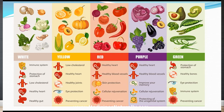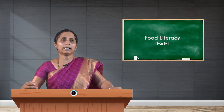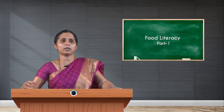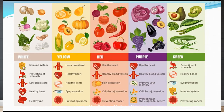Yellow-colored food helps to lower cholesterol, leading to a healthy heart, preventing atheroma formation, and maintaining healthy joints with proper lubrication. These foods also help to protect the eyes and prevent cancer by acting as antioxidants.